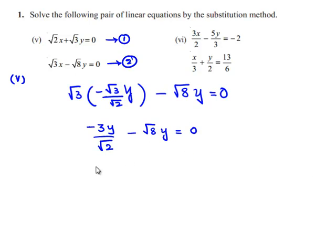Now we can take minus y as a common. We will be getting 3 by root 2 plus root 8 is equal to 0. Now we can say that y is equal to 0. This is because since this term is not equal to 0, obviously y must be equal to 0.